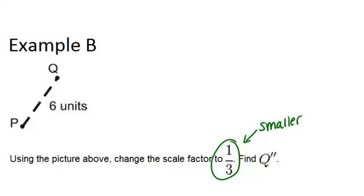So this length, which was 6, when we divide that by 3, it's only 2. So we're only going 1 third of the way to Q, and that's where Q double prime will be.